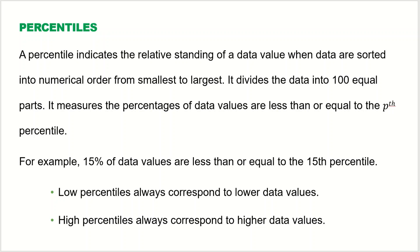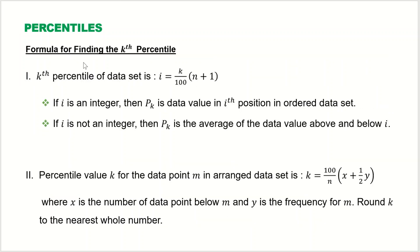Now we are going to look at the formula for the kth percentile — it could be the 70th, 83rd, 2nd percentile, and so on. To find the kth percentile of a data set, we calculate i using the formula: i = (k / 100) × (n + 1). If i is a whole number, the percentile value is the data value at the ith position. If i is not a whole number, the percentile value is the average of the data values just above and below i.